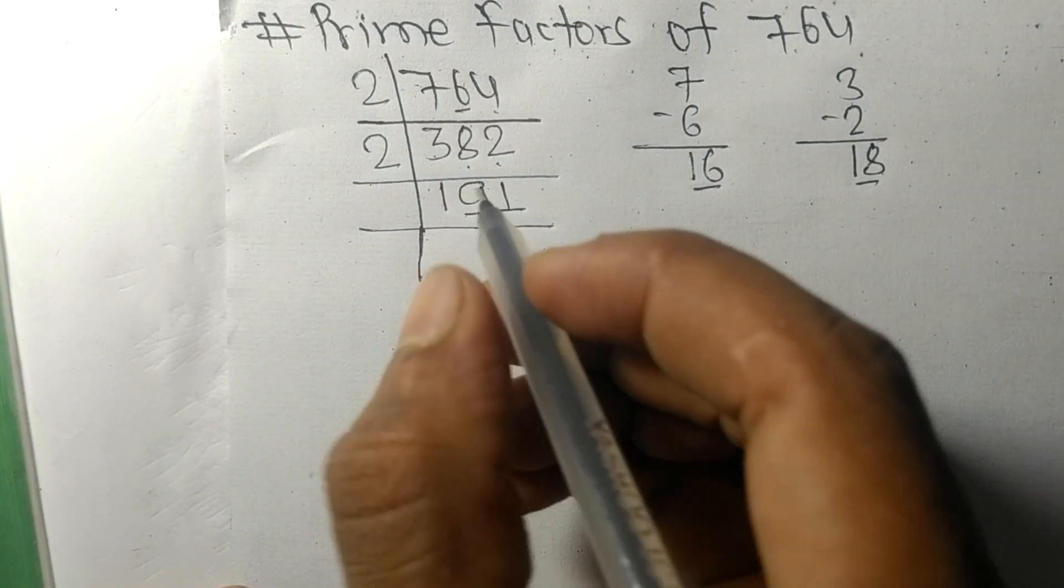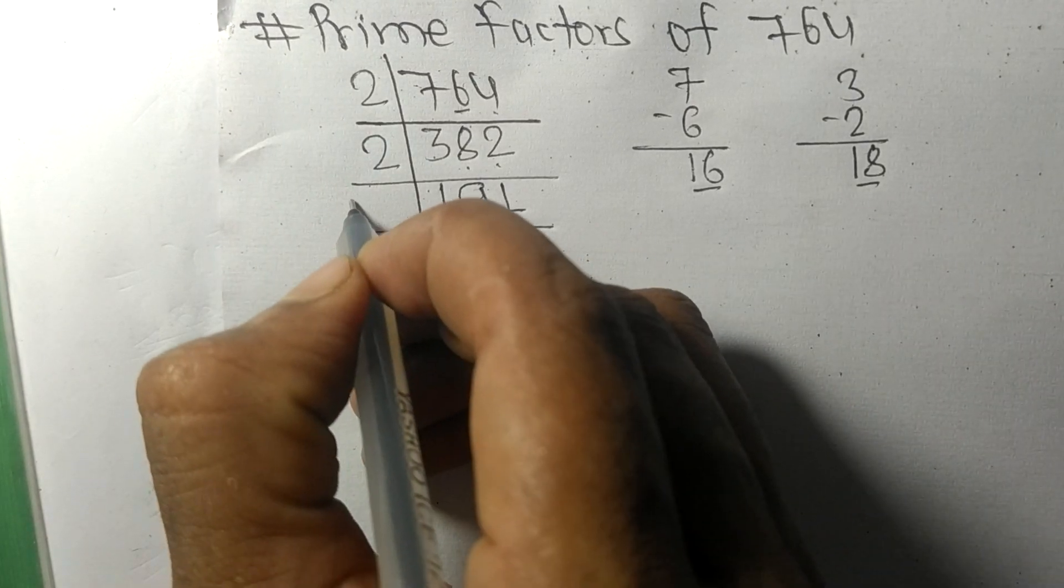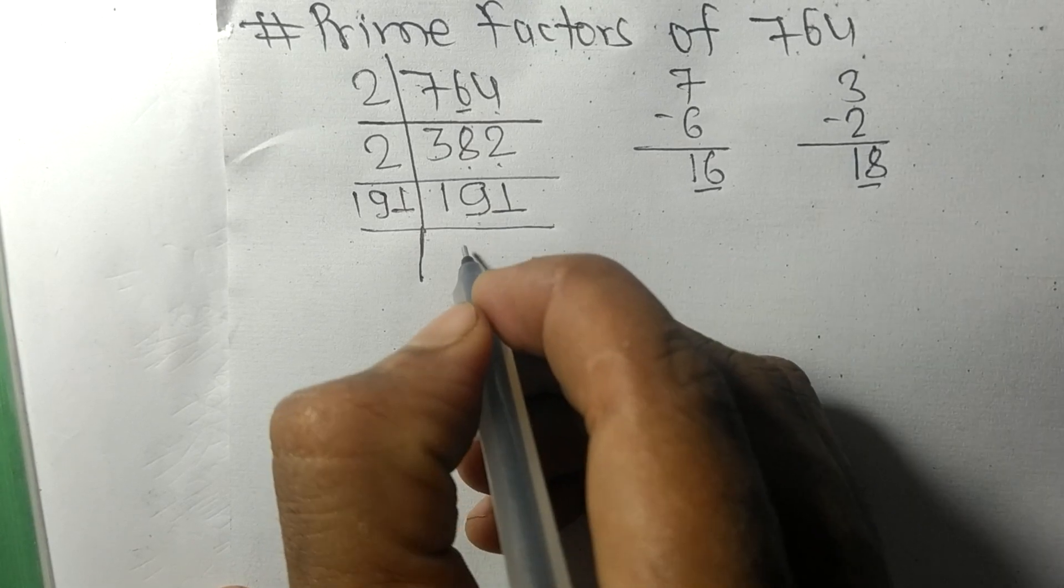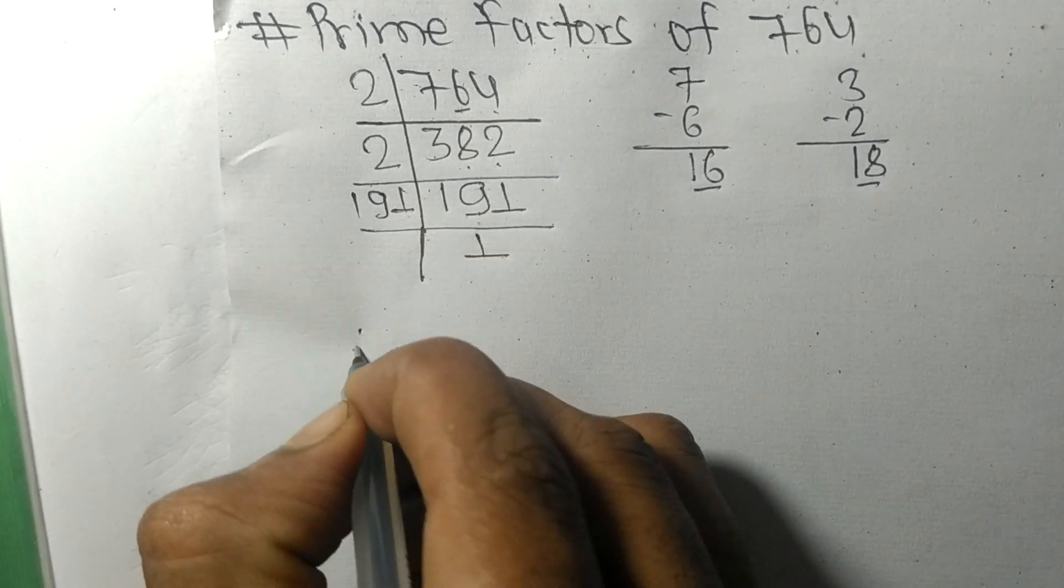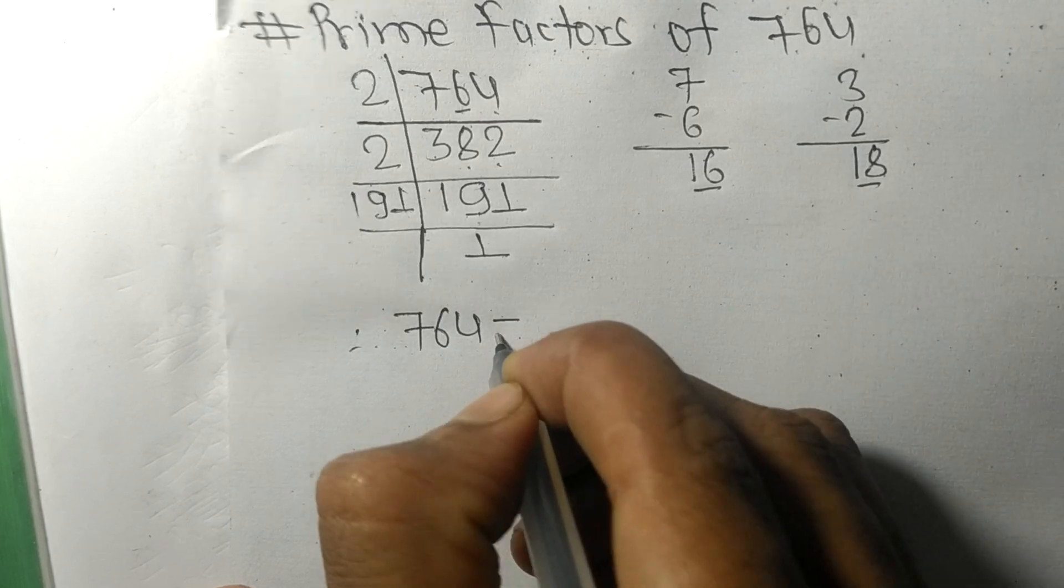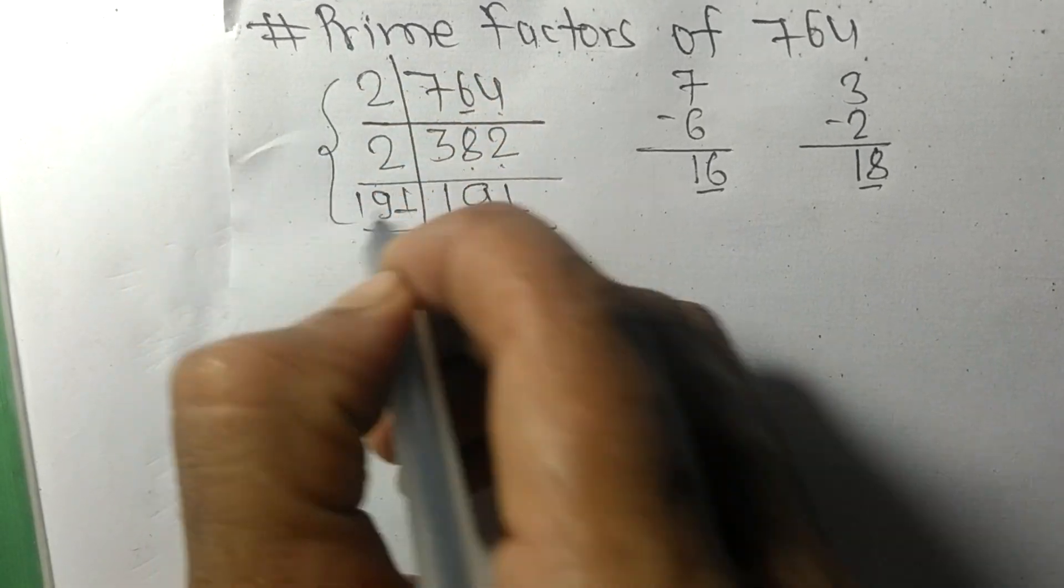It is divisible by 191 only. On dividing we get 1. Therefore, 764 is equal to, from this side...